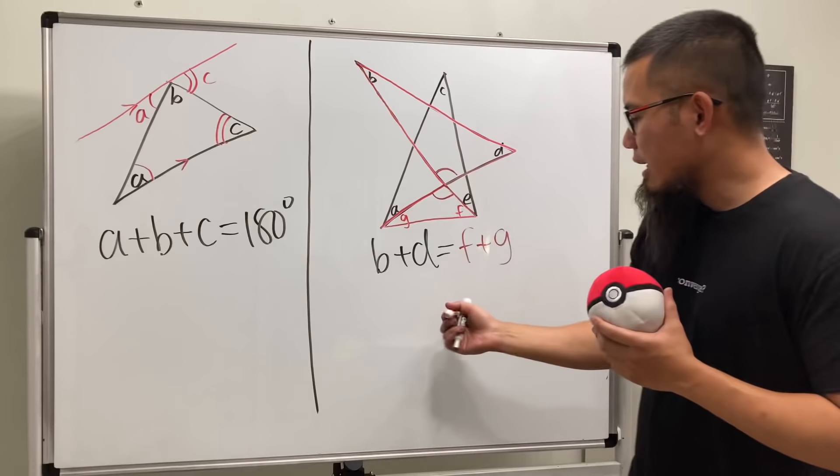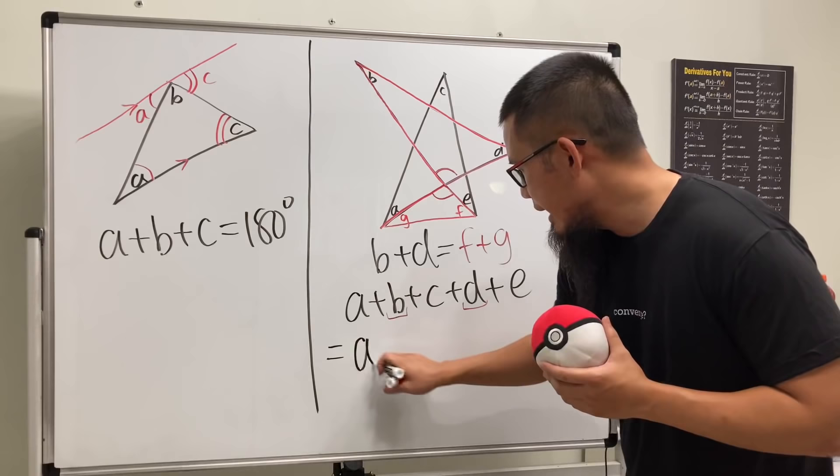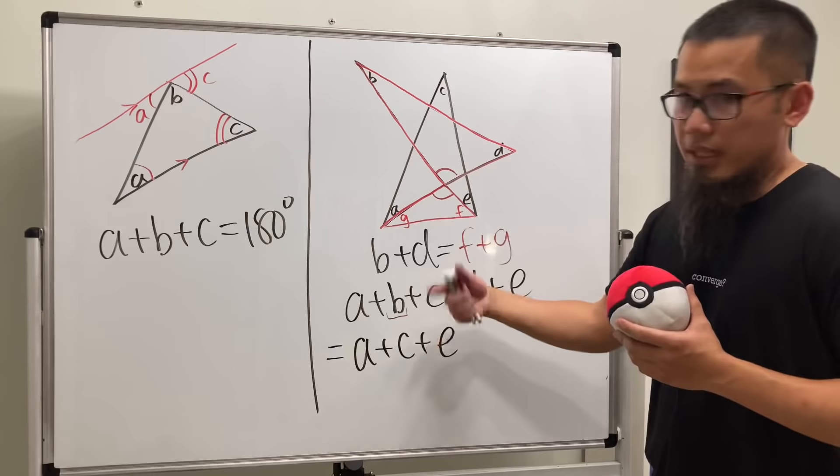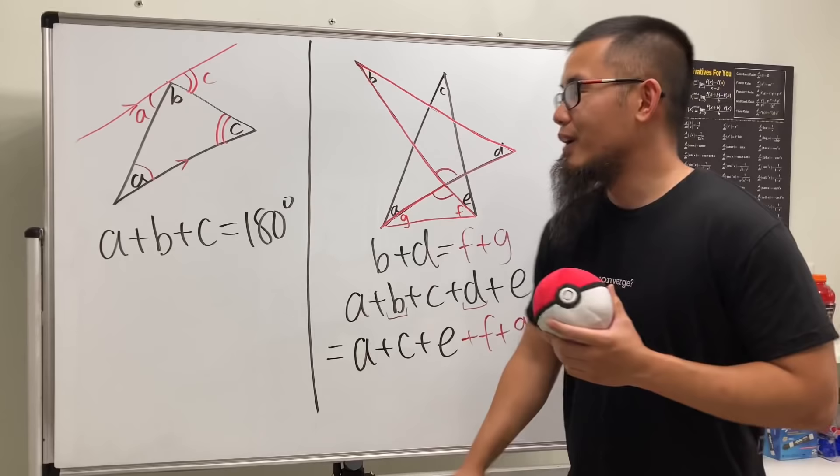But anyway, now let's take a look at the original question which is A plus B plus C plus D plus E. We know that B plus D is equal to F plus G. Let me put down A plus C plus E first. I want to write this down first because if I put down F right here then it looks like B is equal to F which is not what I want. So let me just put these two at the end like so.